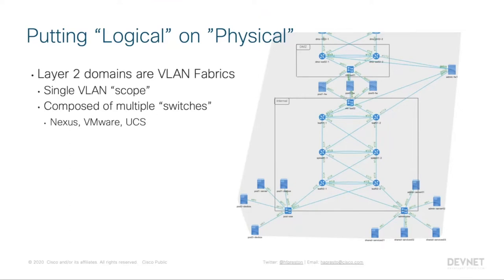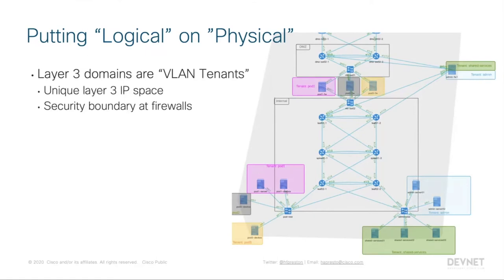Our overall physical data center is composed of a few different VLAN fabrics: one inside behind our firewalls, one between layers of firewalls and routing towards the edge, and smaller VLAN fabrics at edge components across our security boundaries. The second component is the layer three area. We have far more layer three VLAN tenants than layer two VLAN fabrics, because it's the VLAN tenant where things actually go — they get overlaid on top of an individual VLAN fabric.